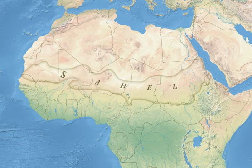The topography of the Sahel is mainly flat. Most of the region lies between 200 and 400 metres in elevation. Several isolated plateaus and mountain ranges rise from the Sahel, but are designated as separate ecoregions because their flora and fauna are distinct from the surrounding lowlands. Annual rainfall varies from around 100 to 200 mm in the north of the Sahel to around 600 mm in the south.